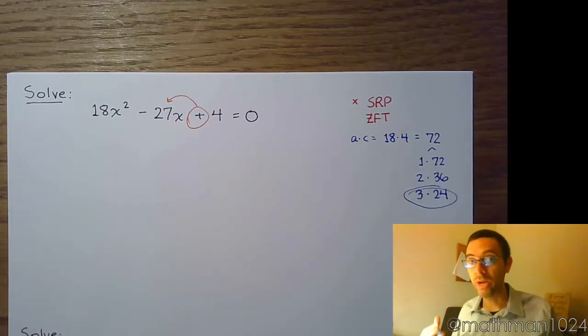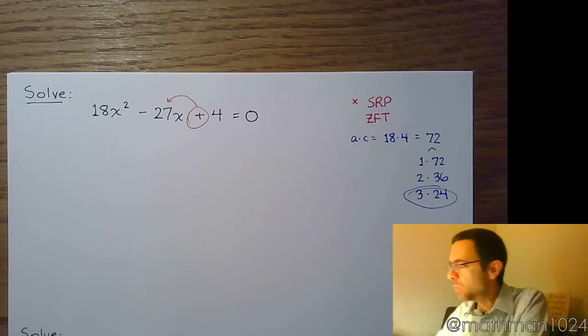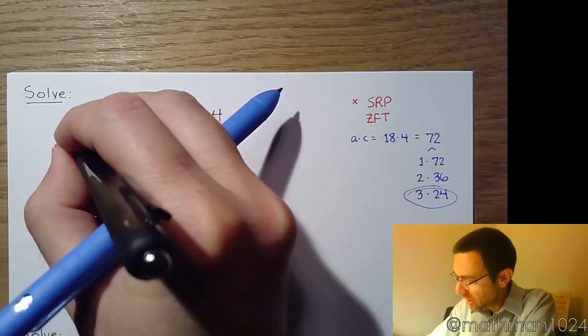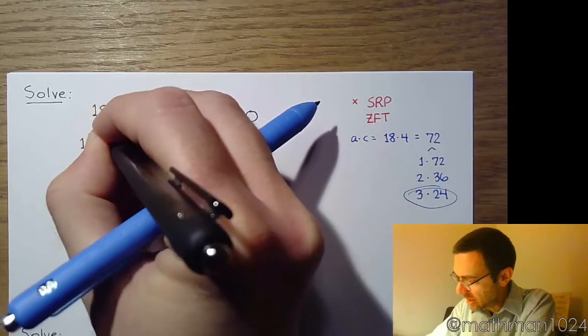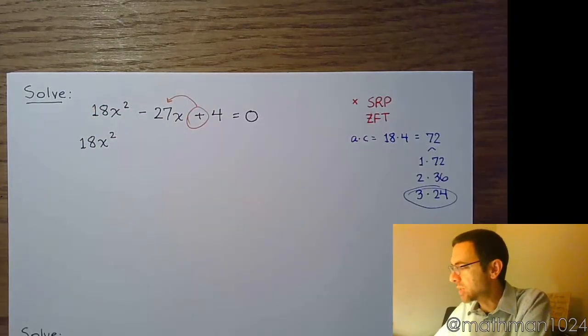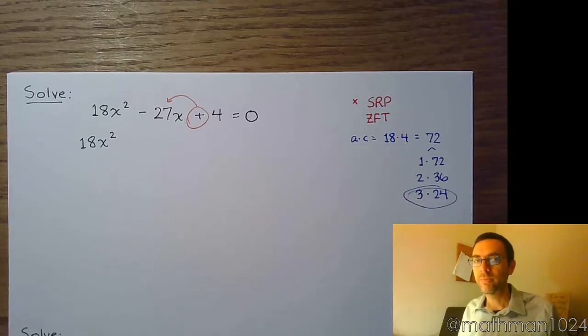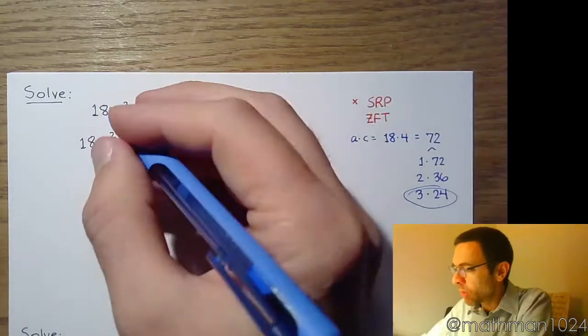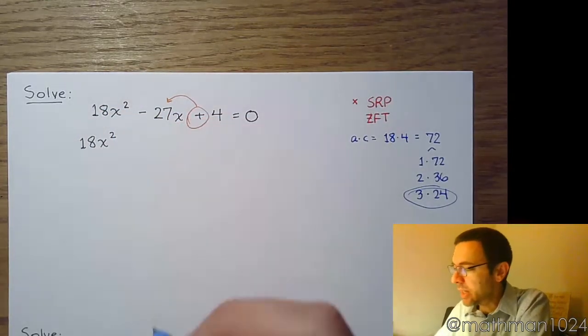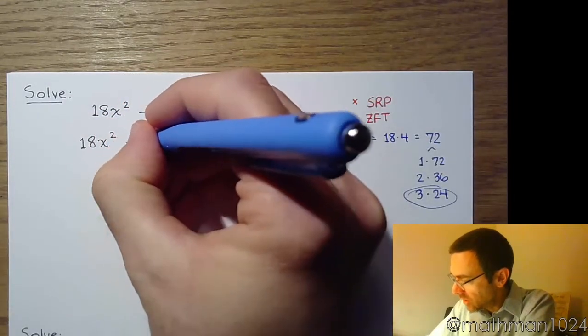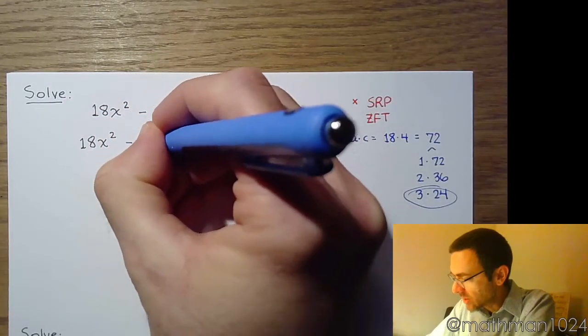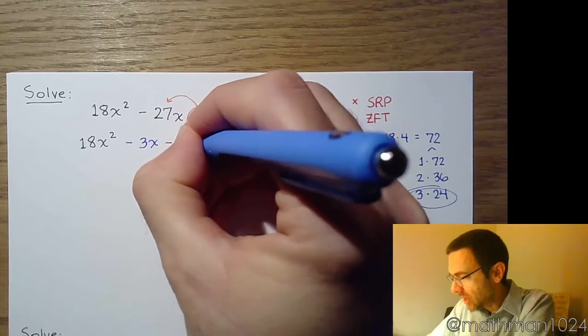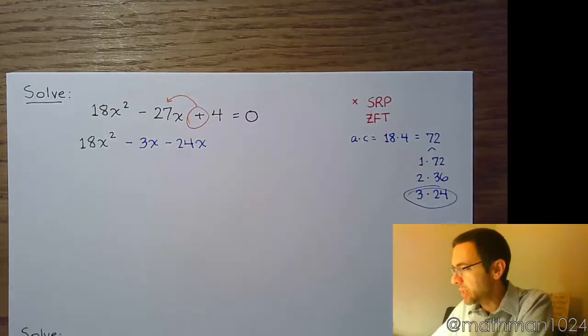How do we now use these? The most common way is to take that minus 27x and rewrite it using the 3 and the 24. The order doesn't really matter, but pay attention to your signs. To get a negative 27x, you need to use negative 3x and negative 24x. They both have to be negative.